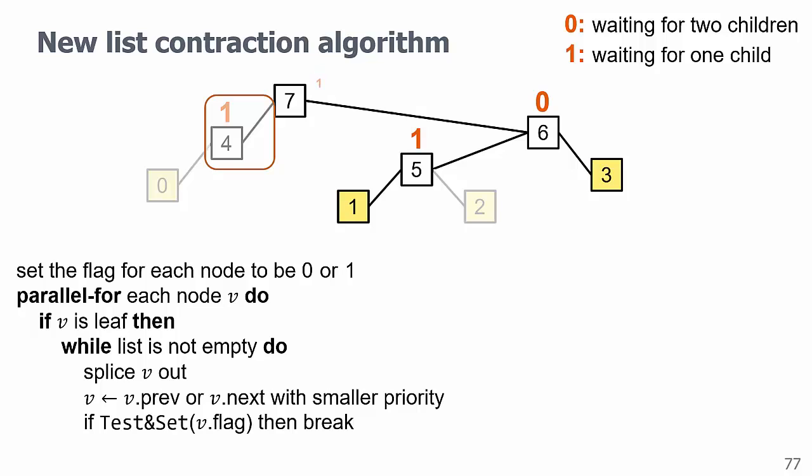Here node 1 finishes, fails the test and set, and takes over 5. Node 3 finishes, wins the test and set, and quits. And then the last node will continue and finish all splices on this path. That's the whole algorithm. It doesn't rely on another algorithm like packing and requires no synchronization at all. And it's easy to check that the work is linear because every time you go into this loop, one node is spliced out and we can only come to here n times.